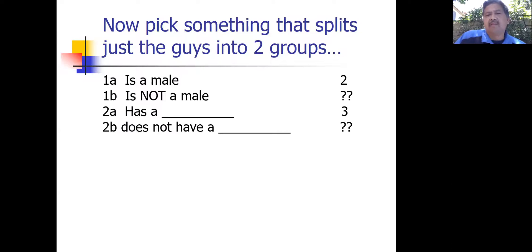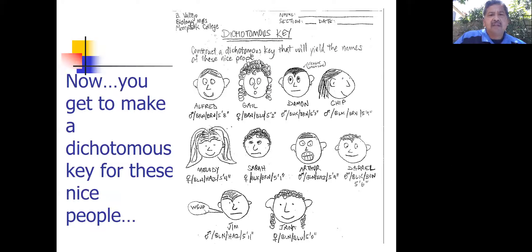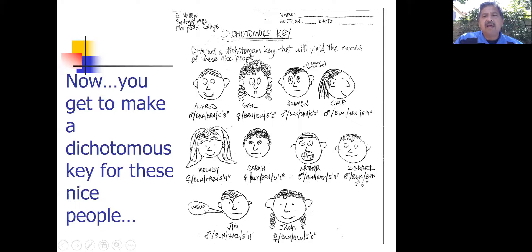Then go to the next paired statements. Pick all the people who have a pointed nose and then pick something else that separates out those people. Take a look at the picture. Here's a guy with a pointed nose — there's Alfred, Damon, Chip, Arthur, Daryl. They all have pointed noses. So let's pick something that separates them out: brown hair, black hair, black hair, blonde hair, and black hair. So maybe 'has black hair' and 'does not have black hair' — something like that.